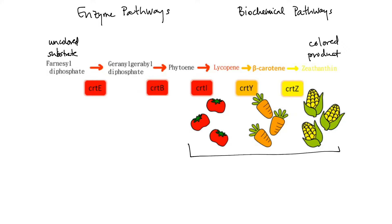Now, farnesyl diphosphate is modified by the enzyme CRTE to produce geranil geranil diphosphate, which can then be itself modified into phytoene by the help of CRT-B, and phytoene can be converted into lycopene by CRT-I. Lycopene itself is actually a colored product, and this is what's present in tomatoes and watermelon to give them their beautiful red color.